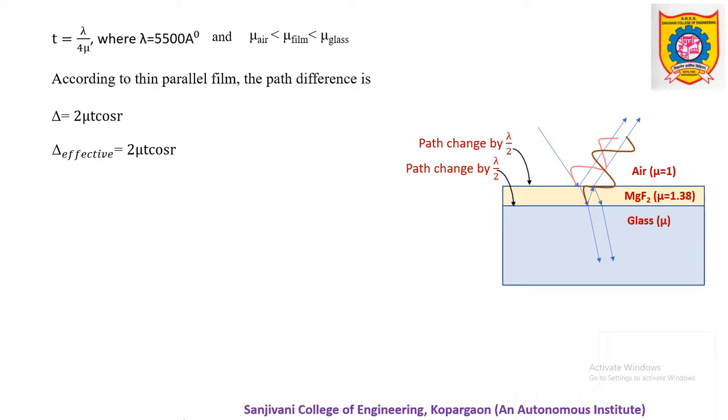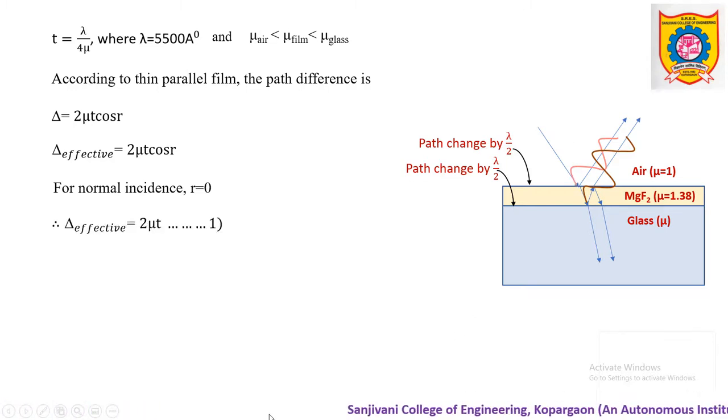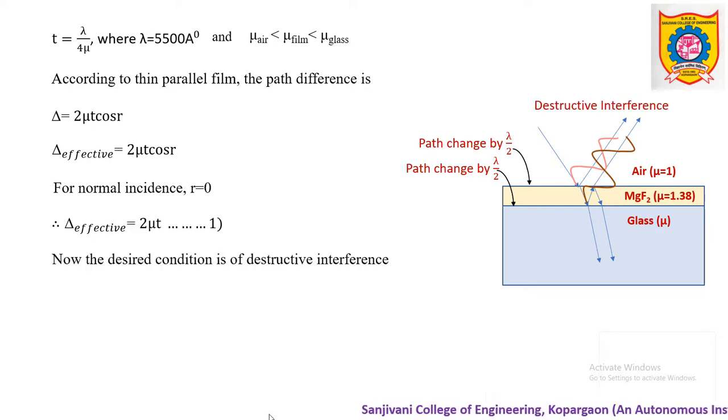This is the effective path difference 2 mu t cos r. If we consider that this light is falling on the film almost normally, r becomes 0 and therefore the path difference is only 2 mu t. We can write one more type of path difference as we want to have non-reflecting type of effect. That means though these rays are reflected from the film, they should act as non-reflecting. When will it act as non-reflecting? When it fulfills the condition of destructive interference.